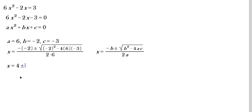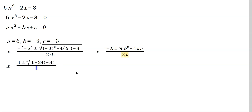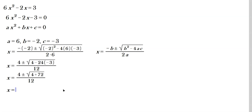So x equals 2 plus or minus the square root of 4 plus — negative 4 times 6 is negative 24, and negative 24 times negative 3 is positive 72 — all over 12. So x equals 2 plus or minus the square root of 76, all over 12.